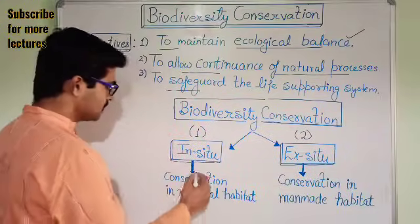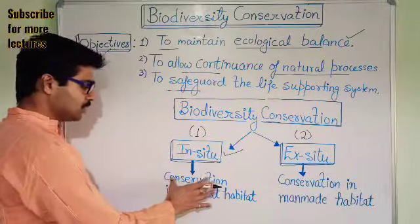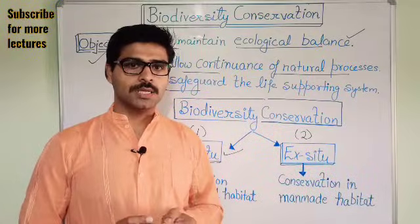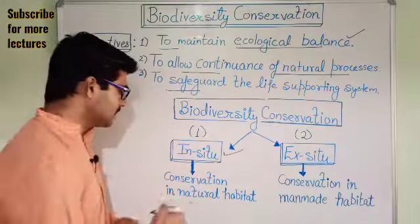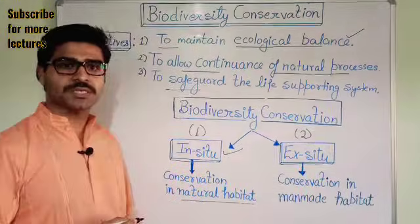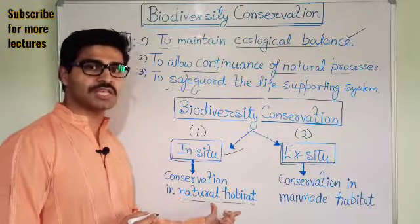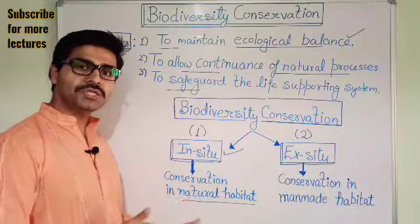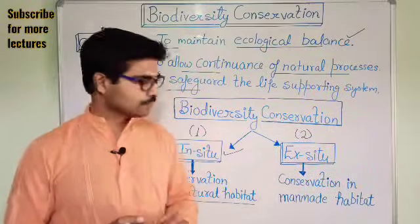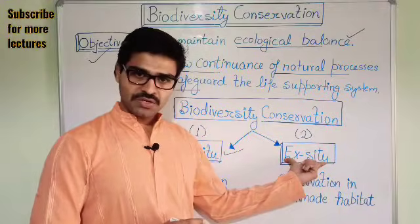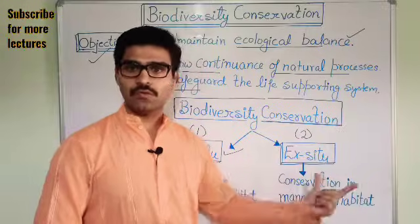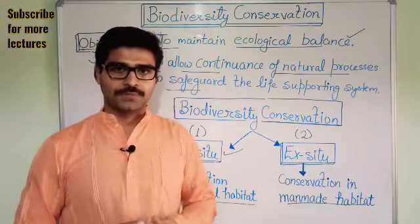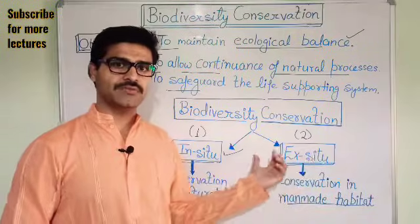In-situ conservation means conservation of any species — whether plant species or animal species — in its natural habitat. For example, the forest itself. If we want to protect a tiger in the forest itself, that is an example of in-situ biodiversity conservation. On the other hand, ex-situ conservation is the conservation of any species in a man-made habitat or man-made conditions.